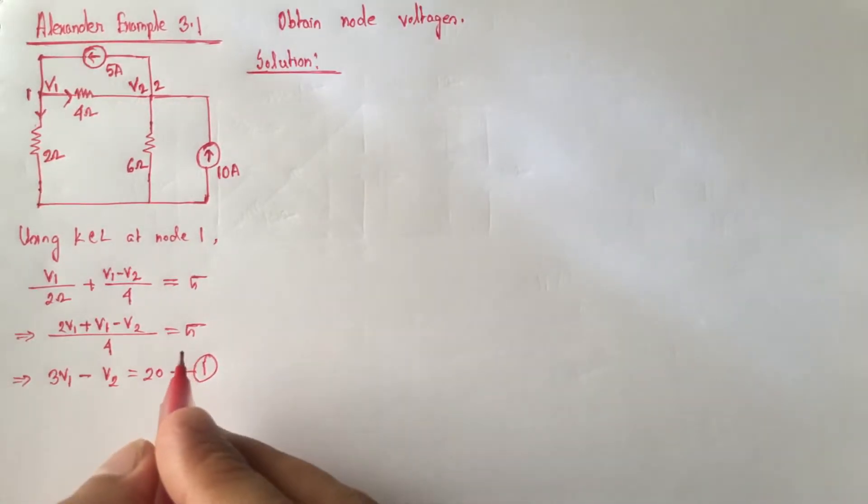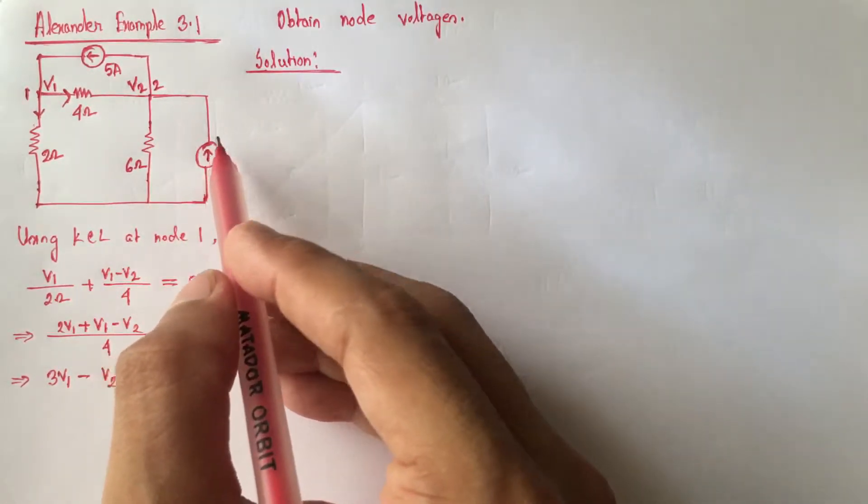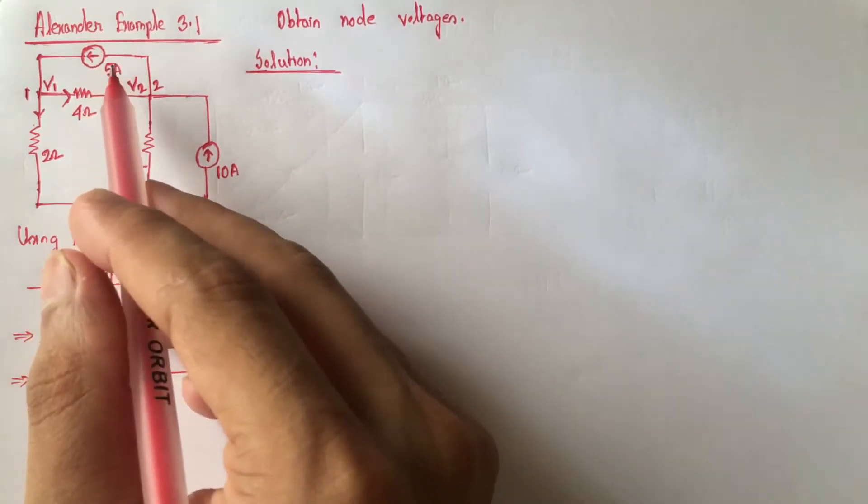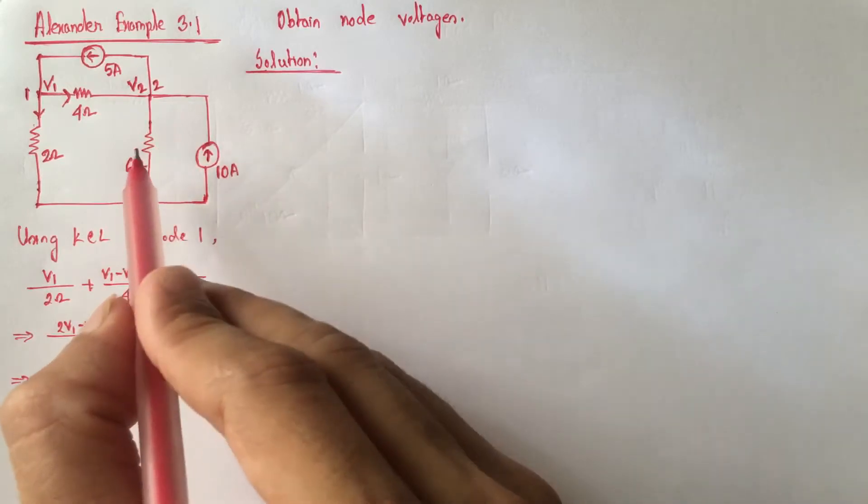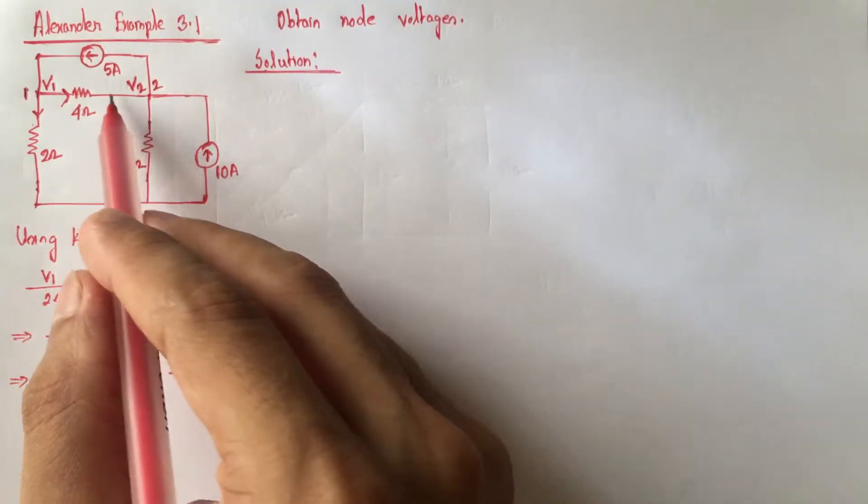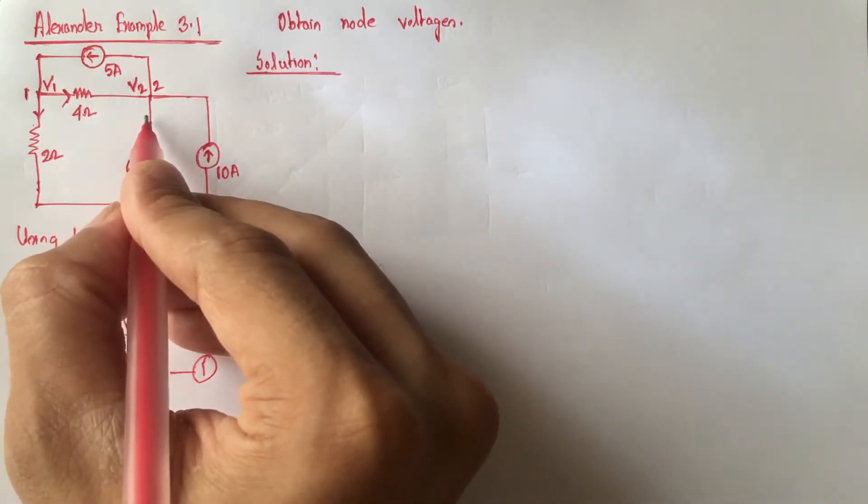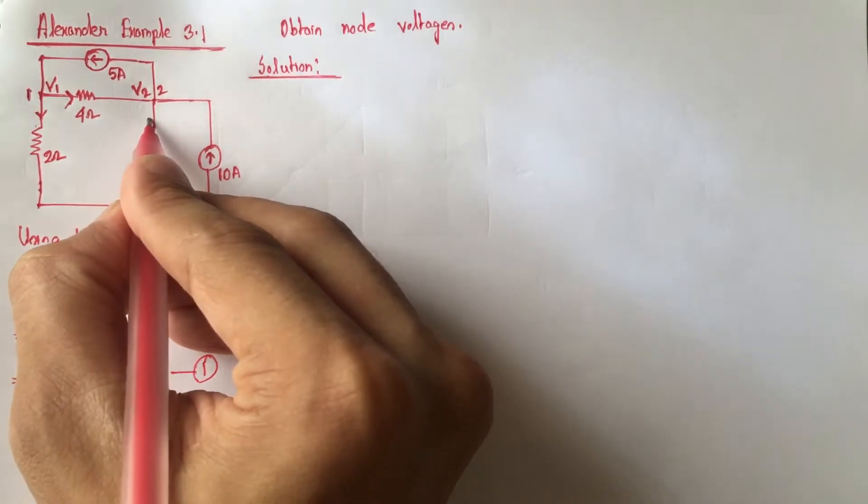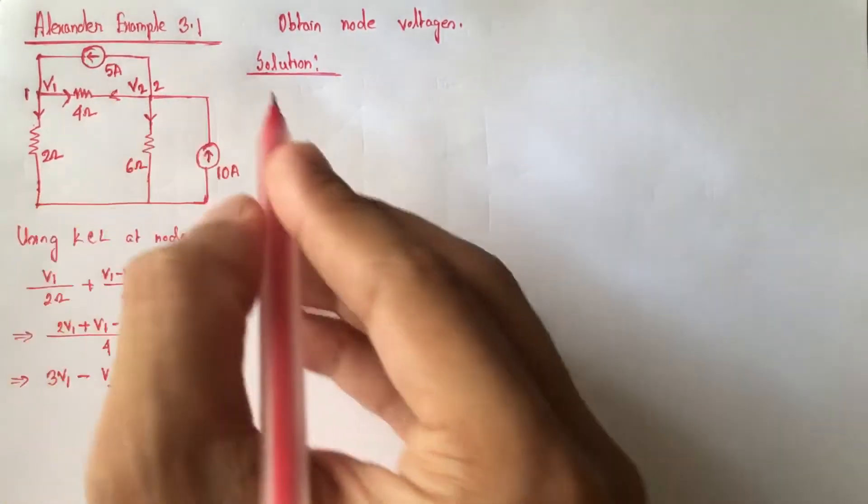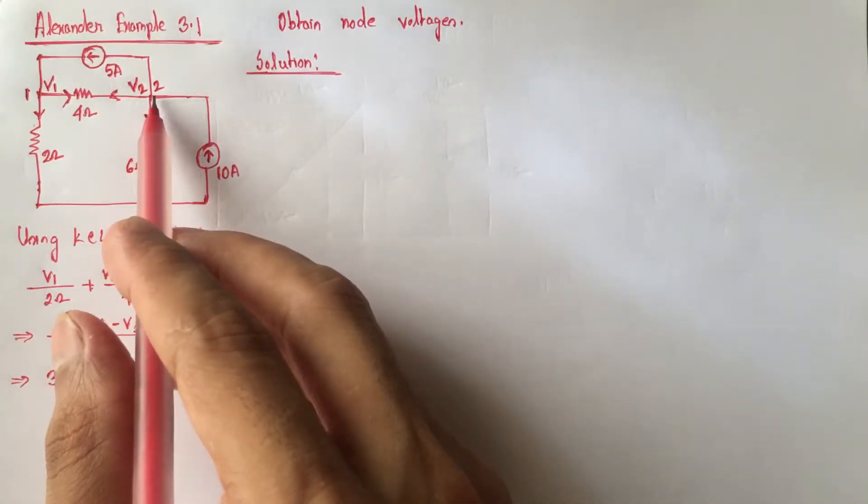Now from node 2 we see that 10A current is entering at node 2 and 5A current is leaving node 2. Current direction for this path and this path is not given, so for calculation we can assume it as our wish and we assume it as going out from node 2. So again if we apply KCL at node 2...